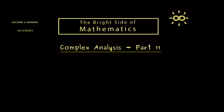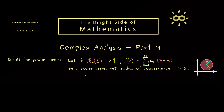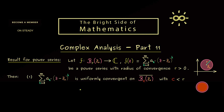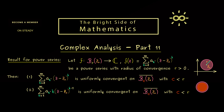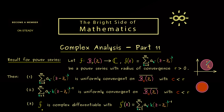Today in part 11 we will prove the important result about uniform convergence and power series from the last video. We have a power series named f defined on the open disk of convergence, and we will show three important statements: uniform convergence on any closed ball inside the disk, the same property for the formal derivative, and that this is indeed the derivative of f — meaning f is complex differentiable and its derivative is as expected.